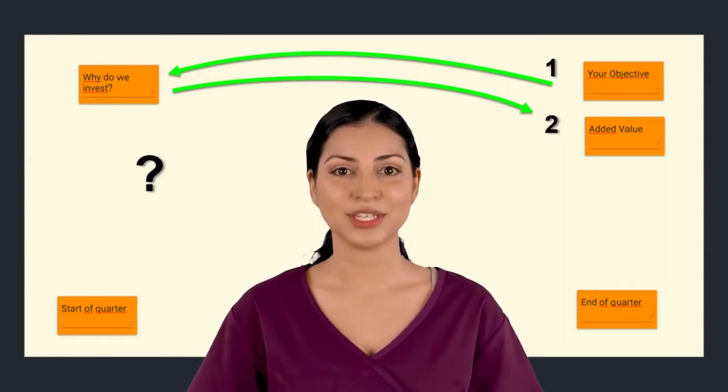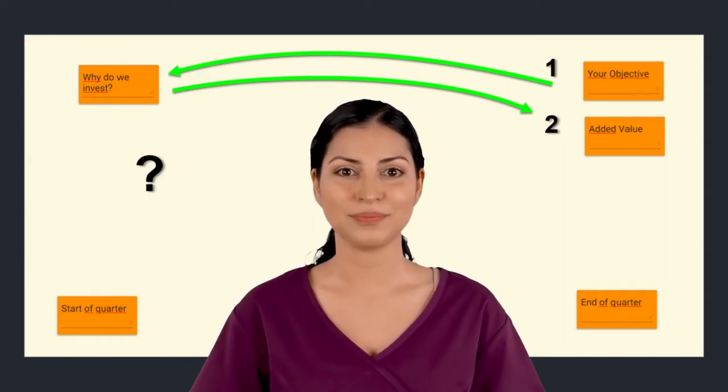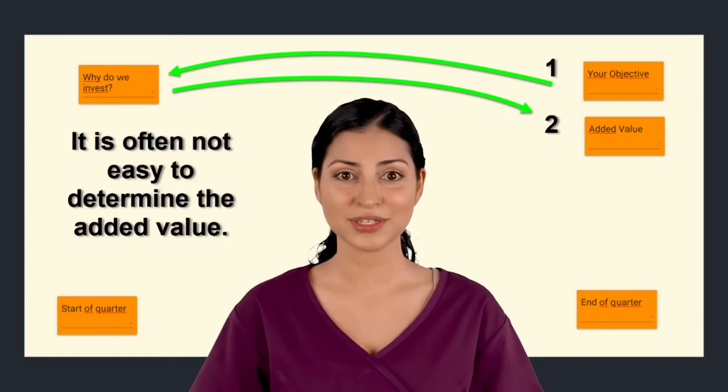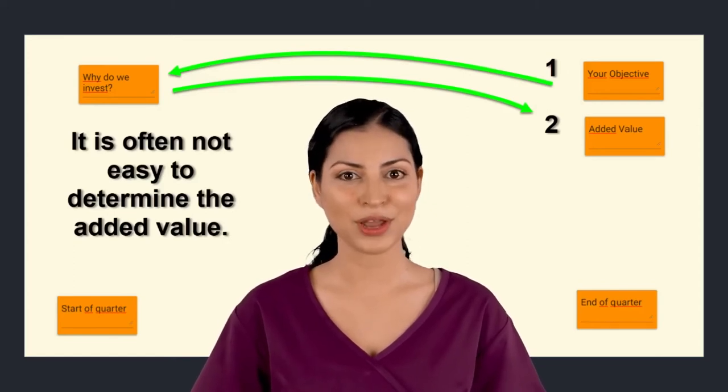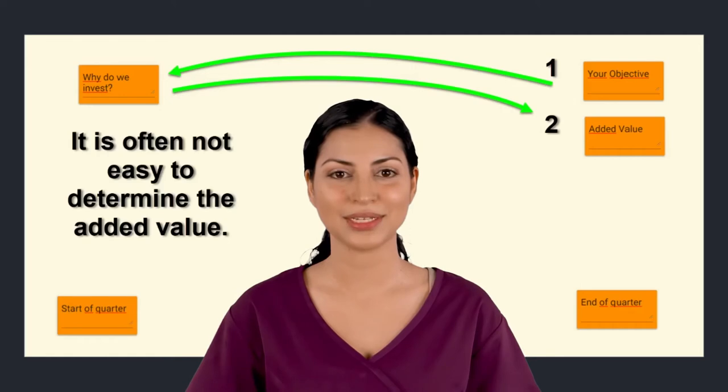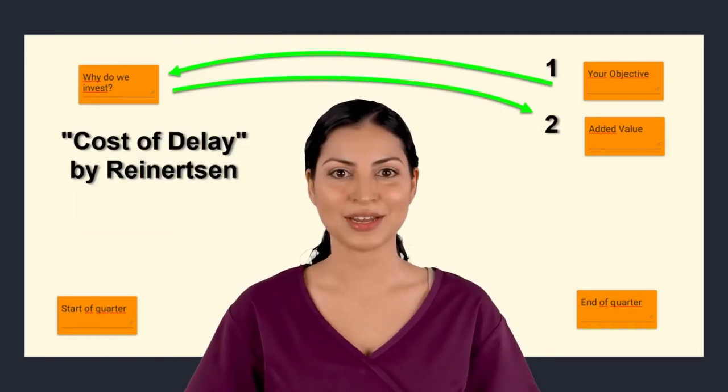Consider a situation where the objective is not implemented on time. Does this cause any damage? If yes, how much? If no, then consider whether the implementation of the objective is really worth it, because without the added value it cannot be a good objective.